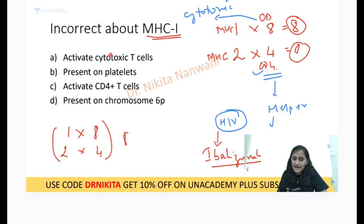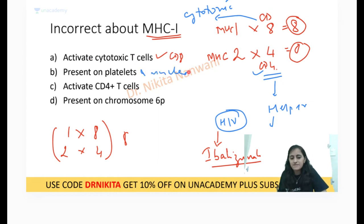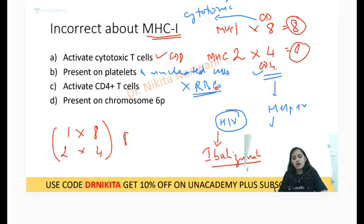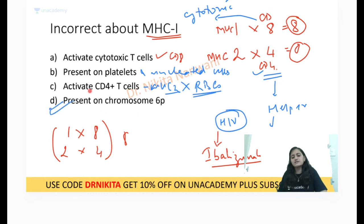So MHC1: it activates cytotoxic T-cells — yes. Present on platelets and all nucleated cells — yes. Not present on RBCs because they are not nucleated. Activate CD4 — no, that is by MHC2. Present on chromosome 6p — yes, it is present on chromosome 6p.